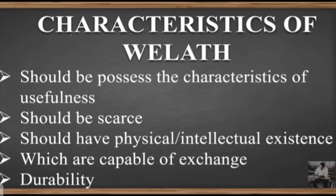The second characteristic is that wealth should be scarce. Commodities which are scarce in supply in relation to demand and possess exchange value, besides being useful, are called wealth. Goods which are useful but not scarce and do not have exchange value — like sunlight and air — are not called wealth in economics. Sunlight and air are available in abundance so they have no exchange value, and therefore cannot be termed as wealth. Money, on the other hand, becomes scarce as we utilize it and can be termed as wealth.